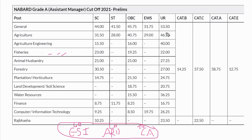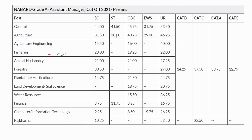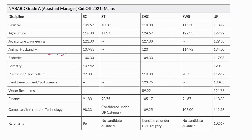ESI is for 40 marks, ARD is for 40 marks, and Current Affairs is for 20 marks. Out of these 100, you need to score 53.5 for unreserved. For the other sections like Quants, Reasoning, and English, you just need to clear the sectional cutoff. Now for the mains cutoff for general discipline: SC 109, ST 109, OBC 114, EWS 115, Unreserved 118.